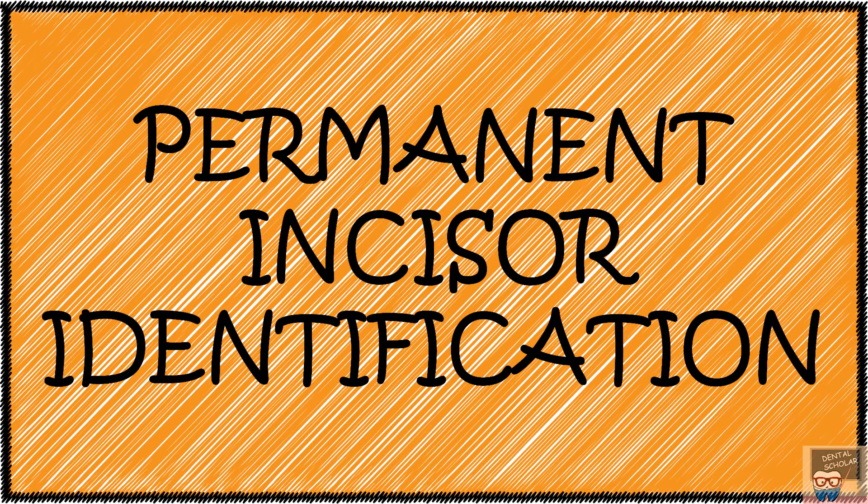Hello everyone, in this video I will tell you how to identify the maxillary and the mandibular permanent incisors. Let's start with the maxillary incisors. Notice that the maxillary teeth will always have their crowns downward and the mandibular will have their crowns upwards, same as they are arranged in the jaws.